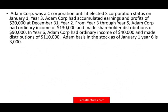Adam Corporation was a C-corporation until it elected S-corporation status on January 1st, year 3. So simply put, year 1 and year 2 we were a C-corp. Adam Corp had accumulated earnings and profit of $20,000 as of December 31st, year 2. So when we were a C-corp, we had $20,000 of AEP.